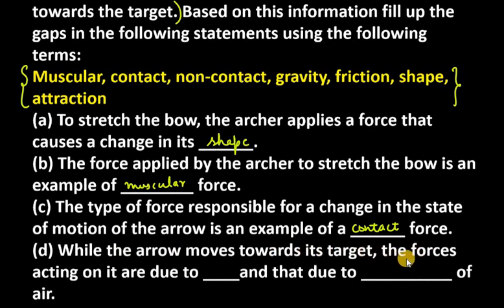D is, while the arrow moves towards its target, the forces acting on it are due to gravity and that due to friction of air. Air के अंदर भी क्या होती है? Friction होती है. So इस वजह से यहां पे friction और पहले gravity.